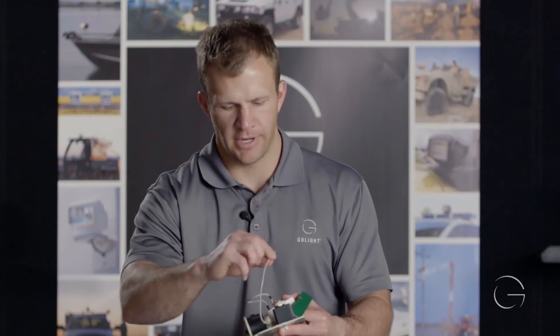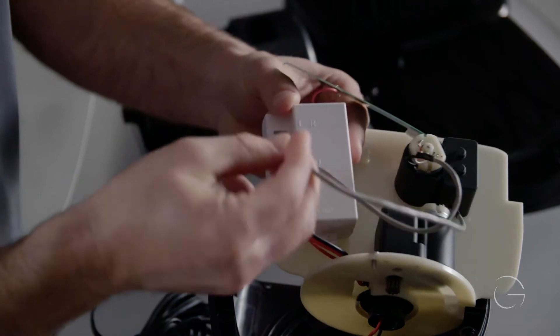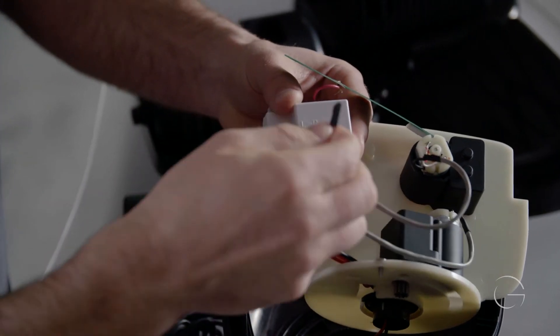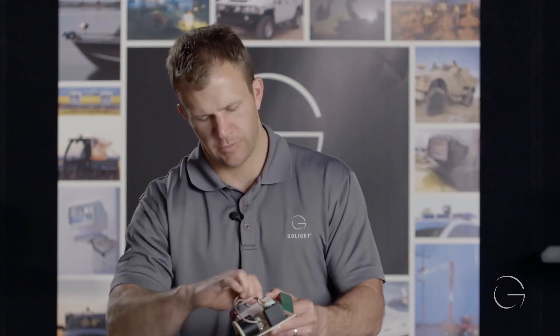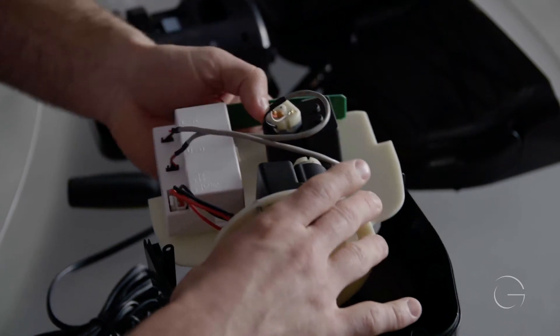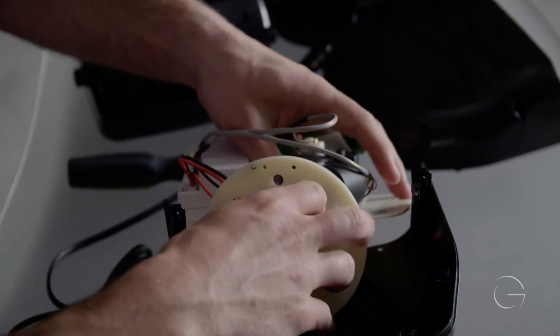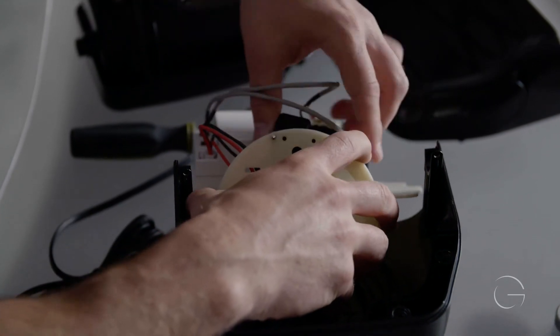Take the connector from the motor and plug it into the left and right position on the receiver. Make sure that's snug.